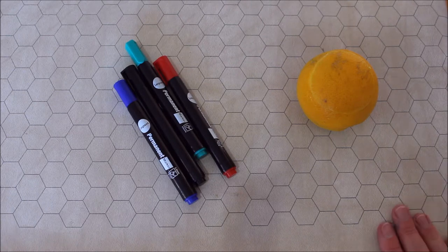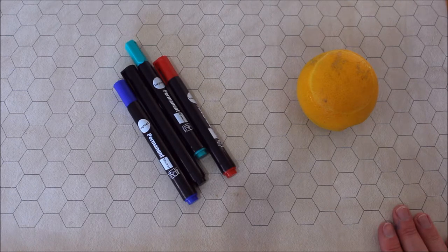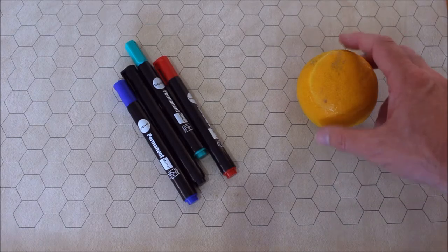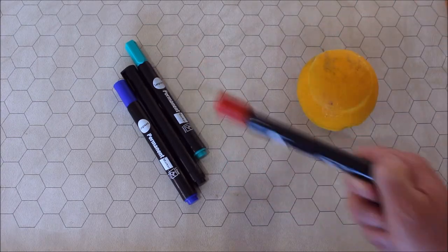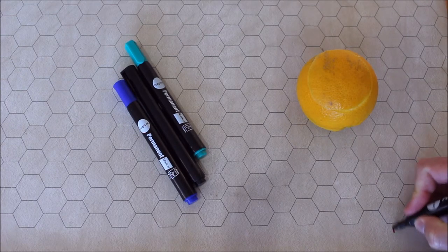This solution for cleaning permanent marker off a vinyl battle mat is probably my favorite. Orange peel. People come up with the strangest things. Let's put the markers on here and see if it works.